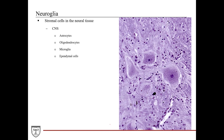Looking at these stromal cells within a neurohistology image, we can easily recognize the neurons by their large cell body and numerous projections. Looking at the smaller nuclei more closely, we can identify the nuclei of the astrocytes, oligodendrocytes, and microglial cells. Astrocyte nuclei are characterized by a slightly larger size and a good mixture of euchromatin and heterochromatin — sometimes described as salt and pepper. Astrocytes are in fact the most numerous cells within the CNS.